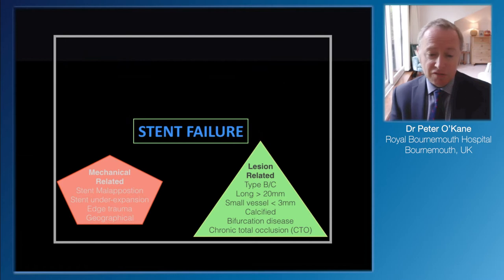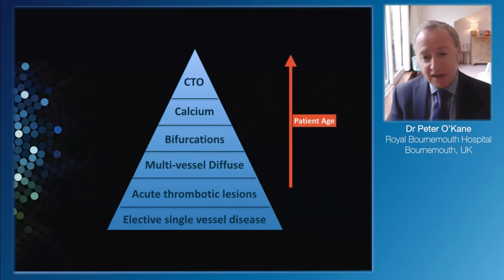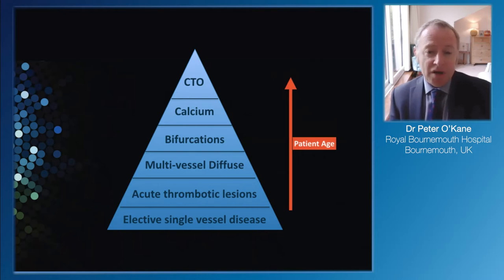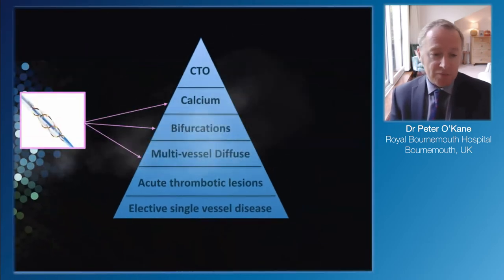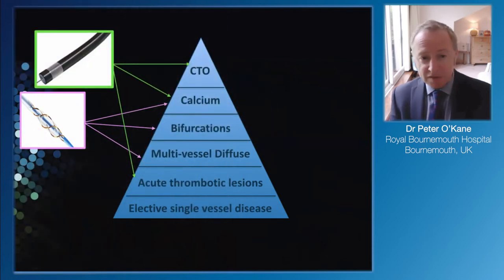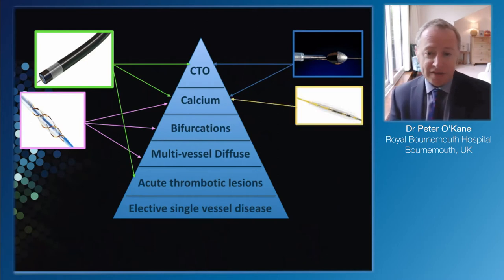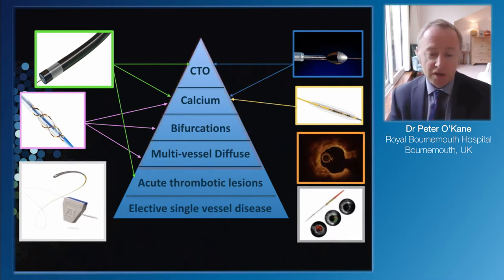The lesion itself is quite responsible: Type B, long lesions, calcification, bifurcations - all part of this pyramid, and as we treat older and older patients these are more common. We need awareness of this and the tools to deal with difficult lesions. Preparation with scoring balloons for calcified lesions and bifurcations, atherectomy devices such as laser, rotational atherectomy, and intravascular lithotripsy with shockwave for calcium, all complemented with pressure wire and intracoronary imaging - all help to avoid stent failure.